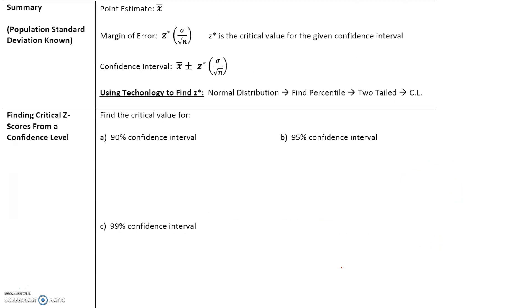Here's a summary: the best point estimate for the population mean is x-bar. The margin of error is Z-star times sigma over the square root of n. The confidence interval is x-bar plus or minus Z-star times sigma over the square root of n. We can use technology to find Z-star: go to normal distribution, find percentile, two-tailed, and enter the confidence level.